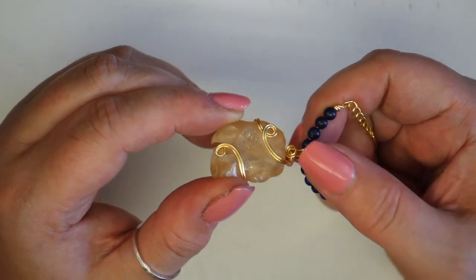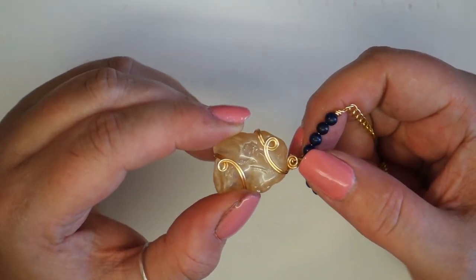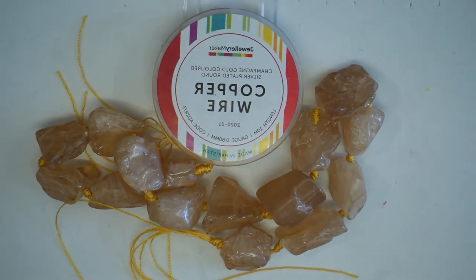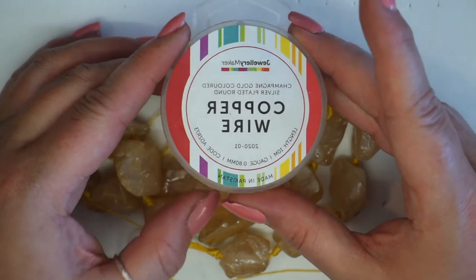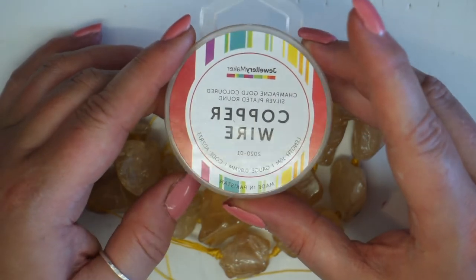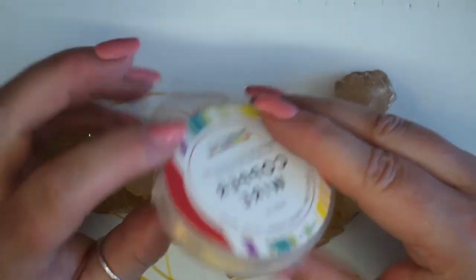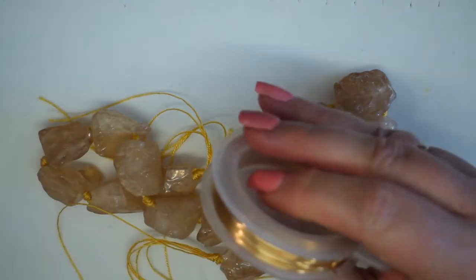So we're going to learn how to do this now. The materials for this project are going to be some 0.8 copper wire. I have champagne gold colored silver plated and it's a lovely warm color that really complements this color gemstone.